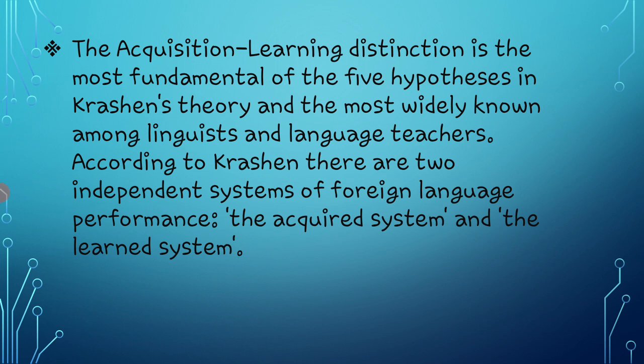The acquisition-learning distinction is the most fundamental of the five hypotheses in Krashen's theory, and it is the most widely known among linguists and language teachers. According to Krashen, there are two independent systems of foreign language performance: the acquired system and the learned system. The acquired system, or acquisition, is the product of a subconscious process very similar to the process children undergo when they acquire their first language.